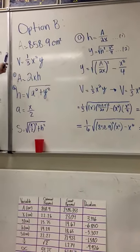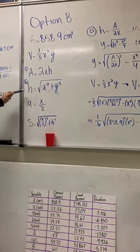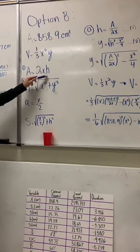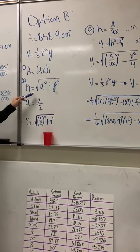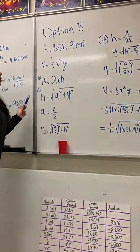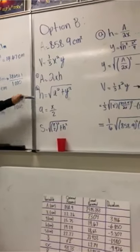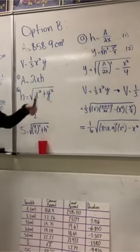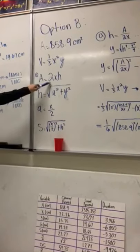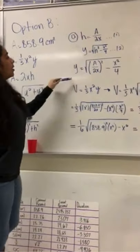For option B, we were given an area of 858.9 centimeters squared. Using the formulas A = 2xh and h = the square root of the apothem squared plus y squared, we were able to find a new equation. Through the combination of these two different formulas, we were able to find a new formula for the overall volume.